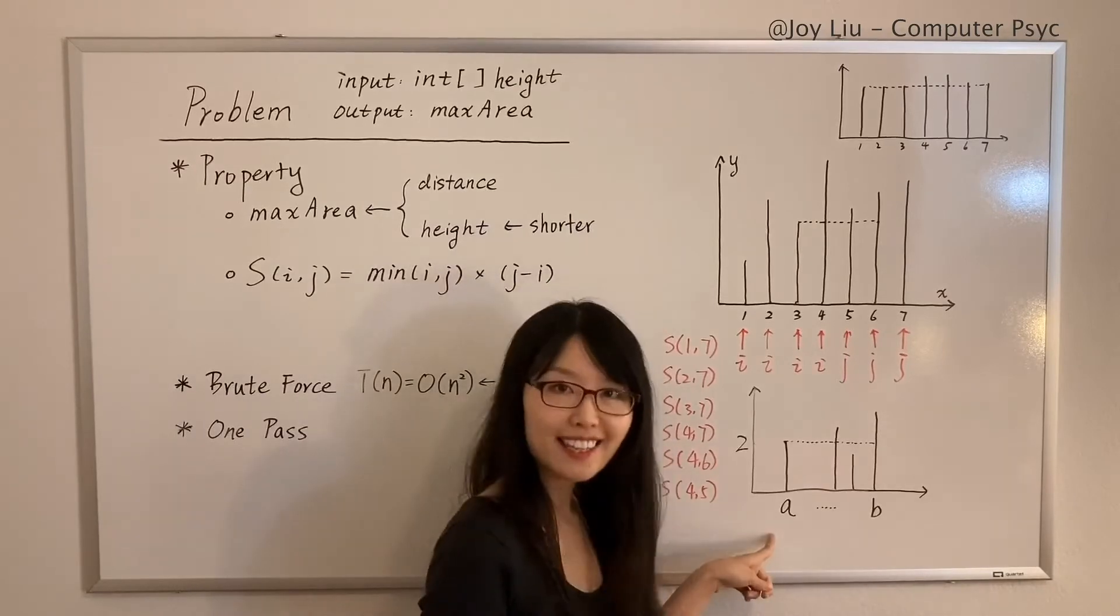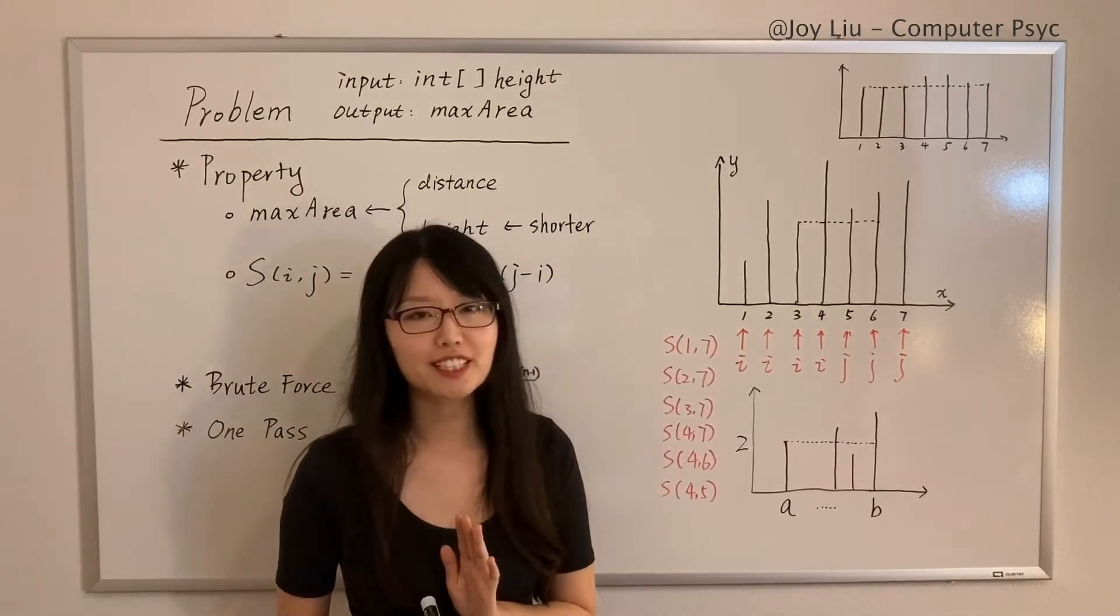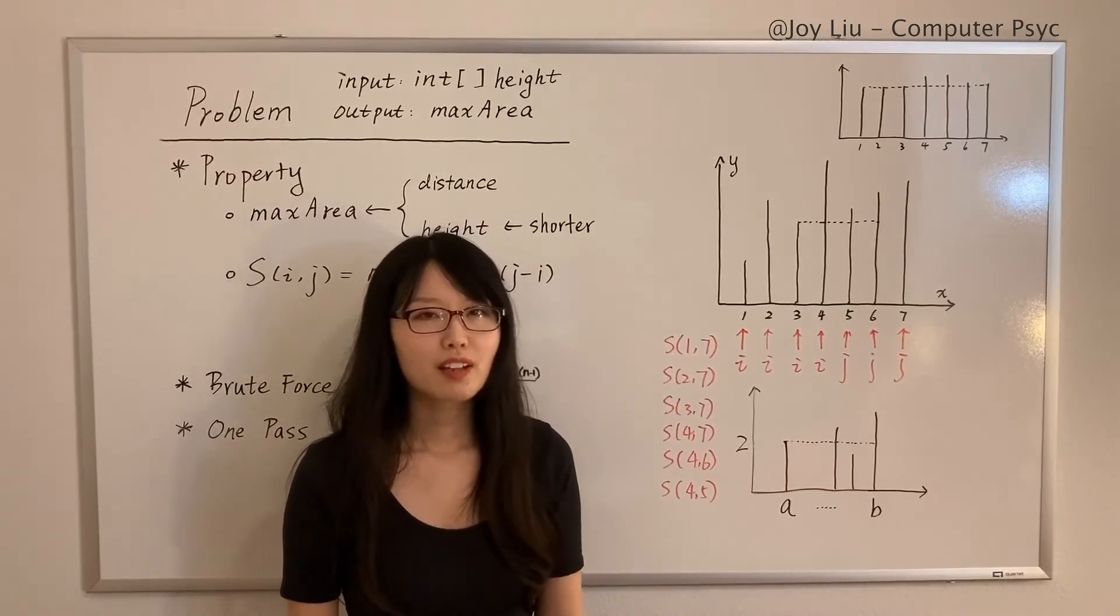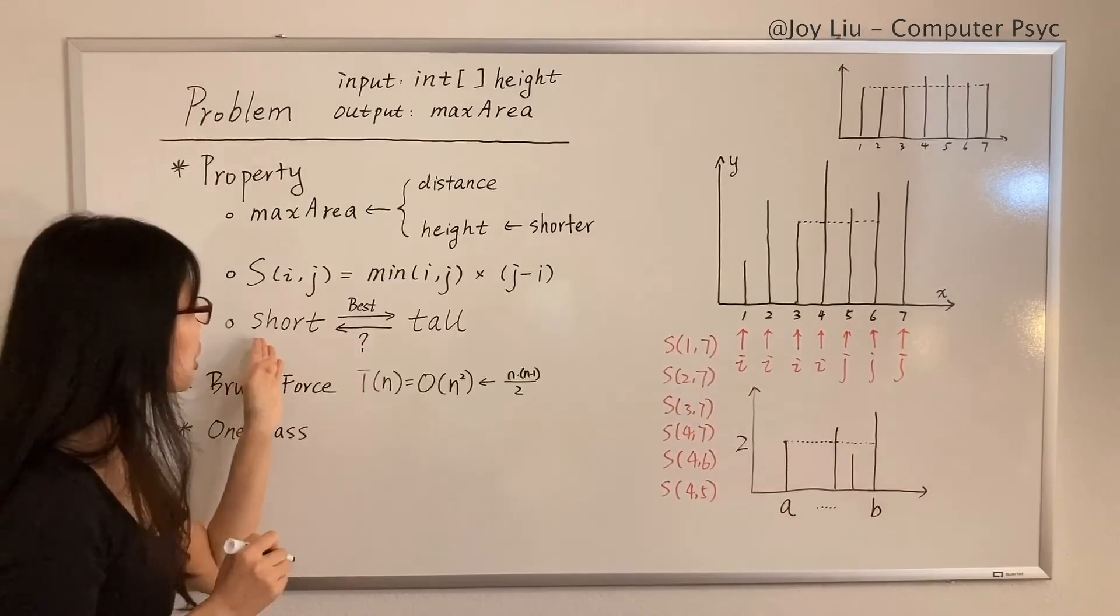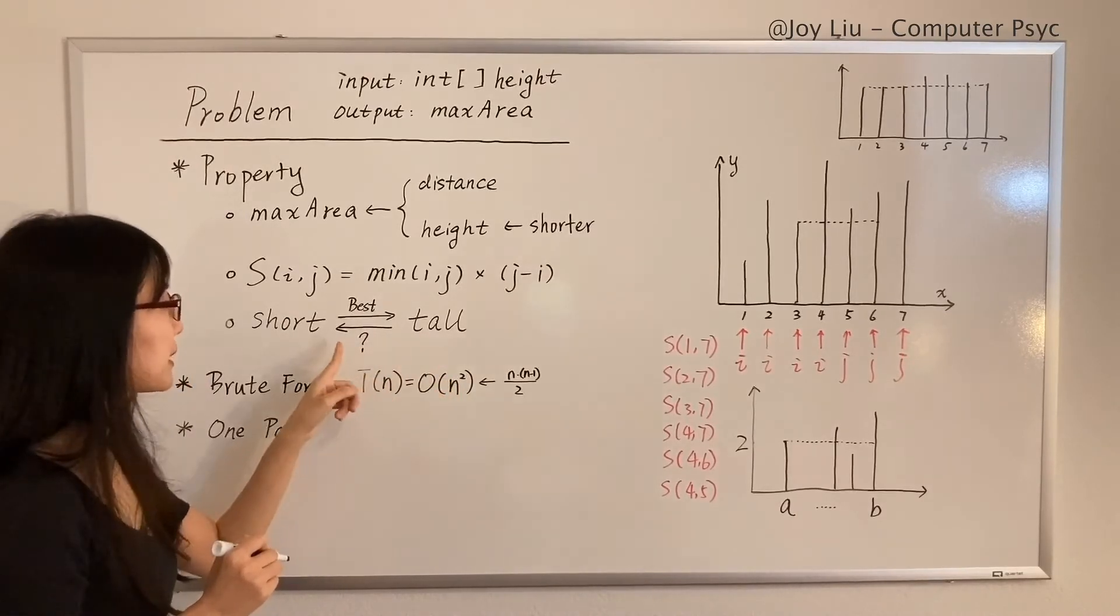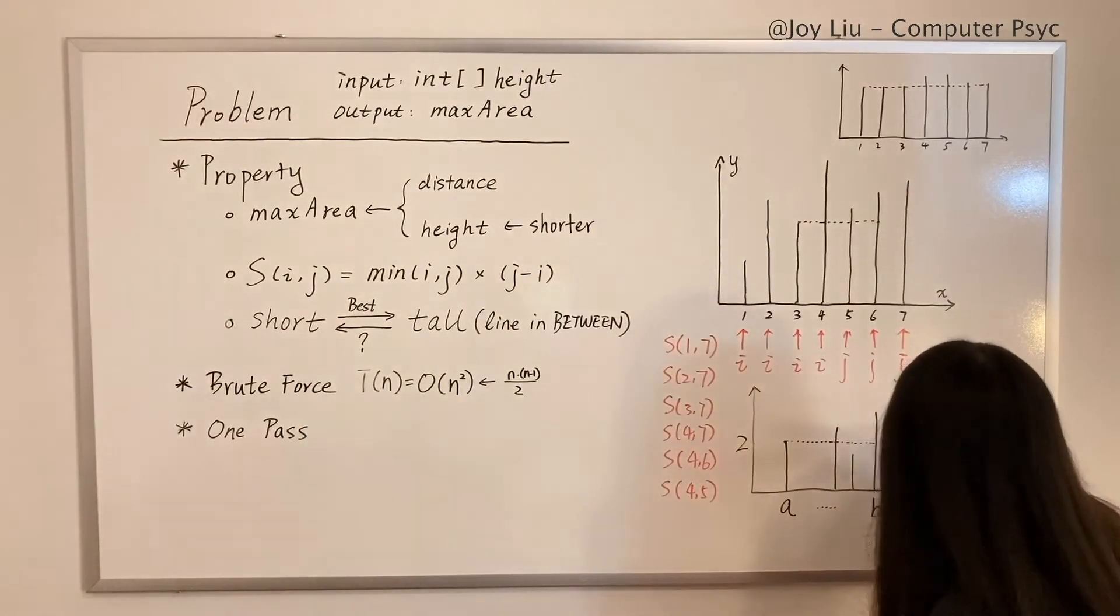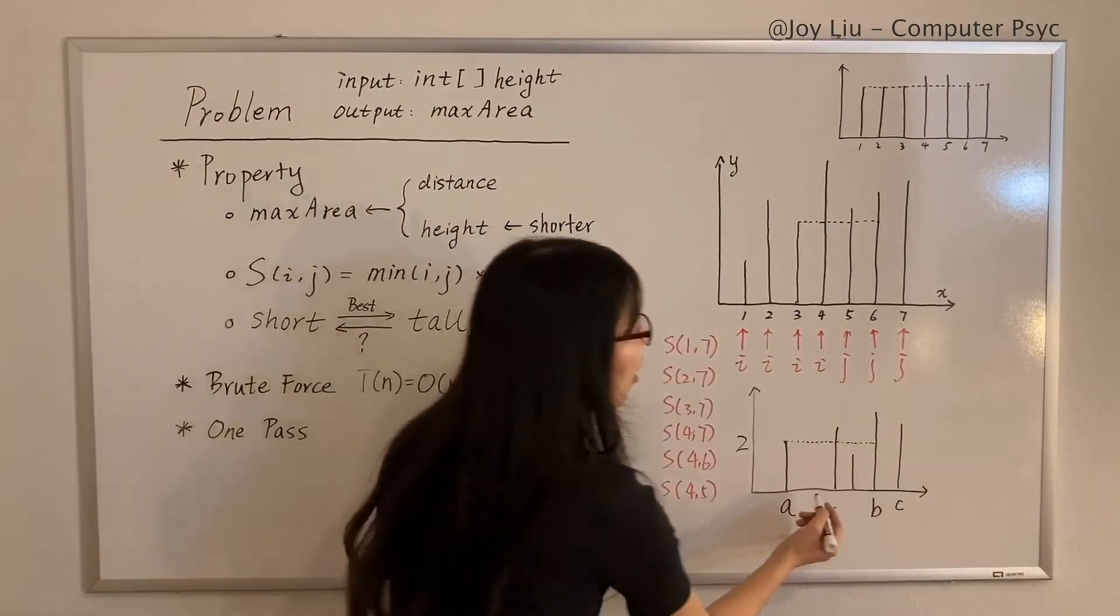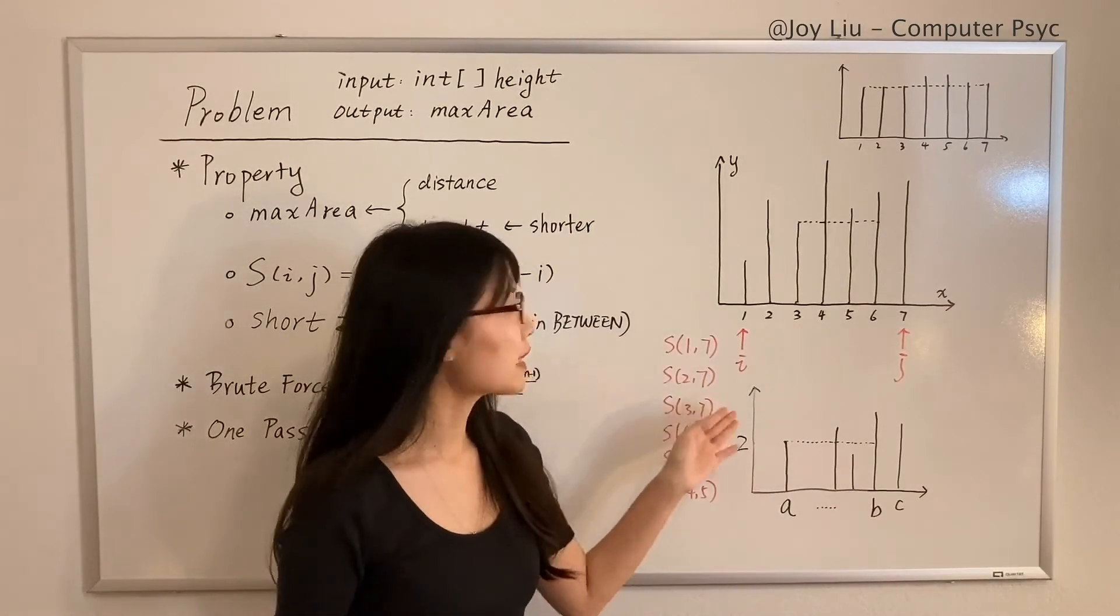Because as long as there is a container with a as a side, this one, the height is at most two. If the other side is taller, say here, the height is still two, right? If the other side is shorter, it's even worse. So from the perspective of a, its best choice is b. Therefore, we don't have to calculate these containers in between because we already know they must be smaller.